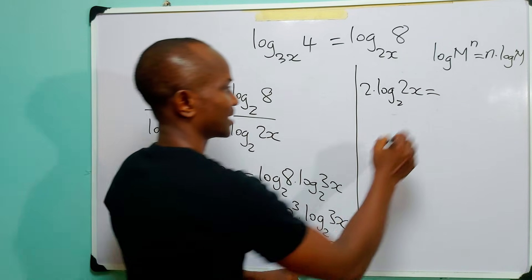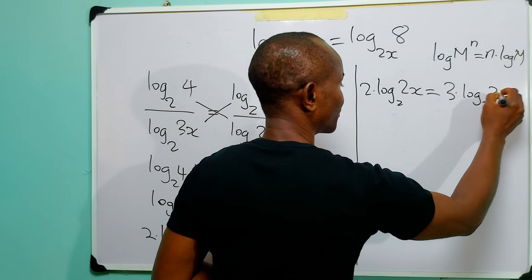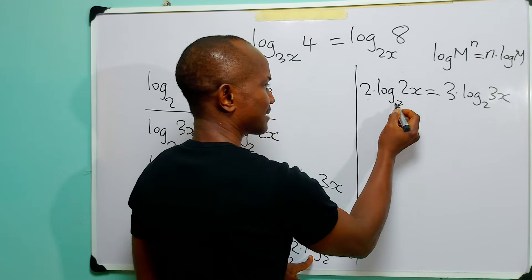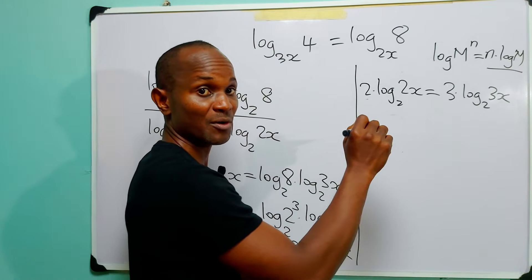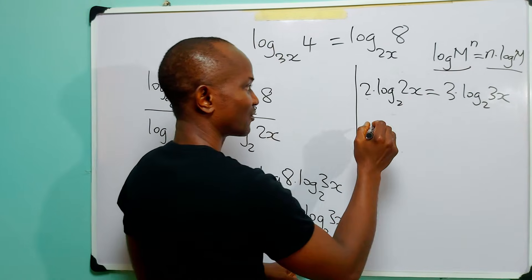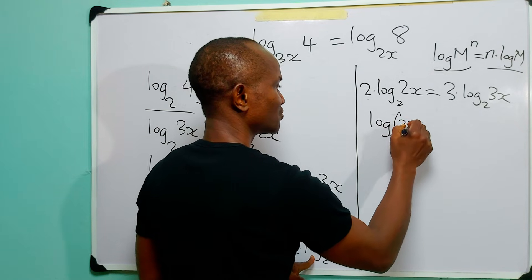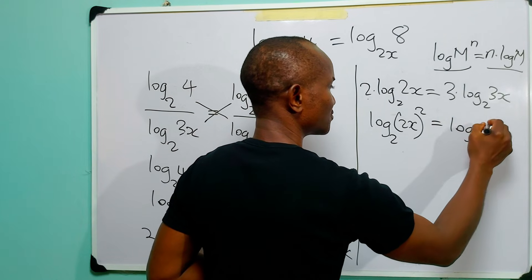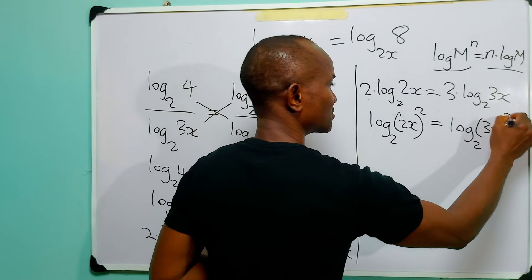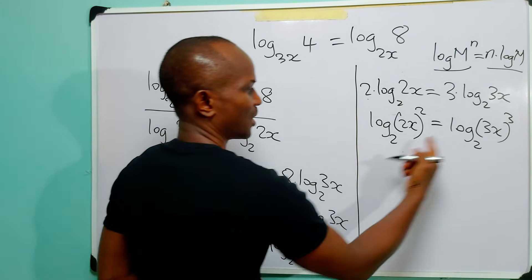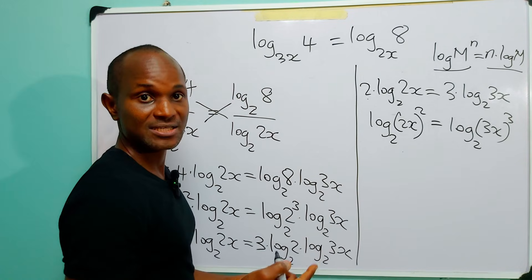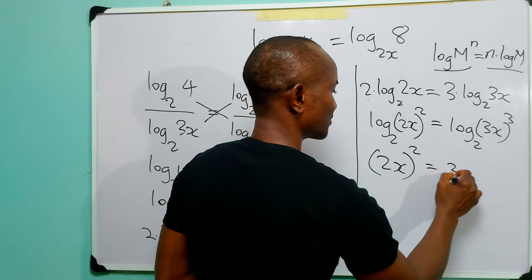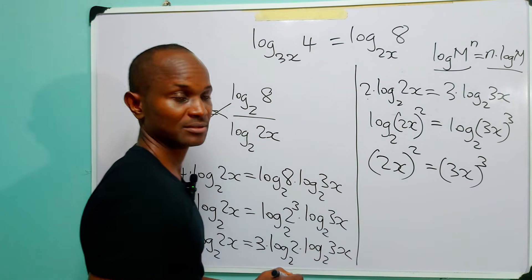Once more applying the power law in reverse, we can write 2 times log base two of 2x as log base two of (2x)², and 3 times log base two of 3x as log base two of (3x)³. Since their logarithms are equal, it simply means that (2x)² equals (3x)³.